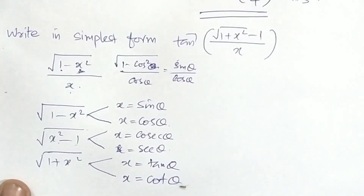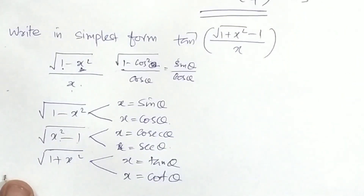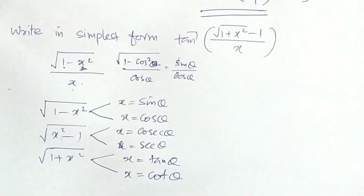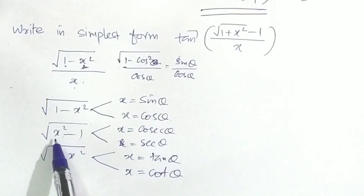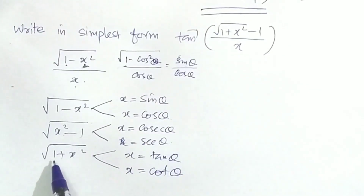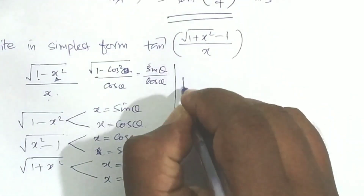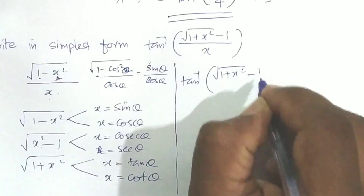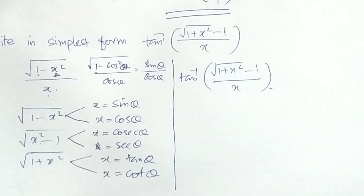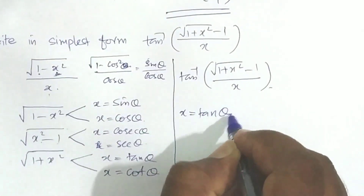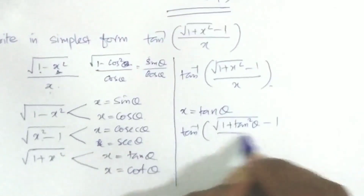We use the identity: 1 plus tan squared theta equals sec squared theta. For our question, tan inverse of root(1 plus x squared) minus 1 divided by x, since root(1 plus x squared) involves 1 plus x squared, we let x equal tan theta.